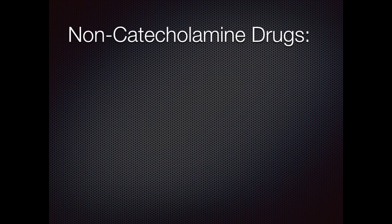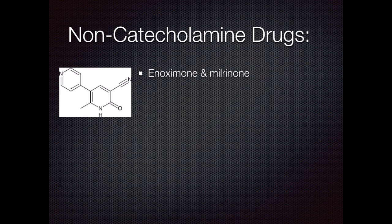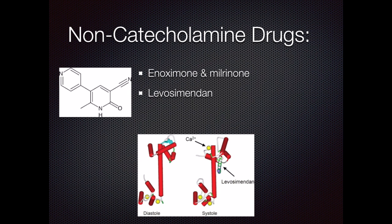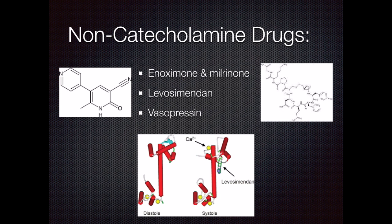There are other vasoactive drugs that are non-catecholamine and therefore do not work on adrenergic receptors. They work further downstream in the G-protein-stimulated secondary cascade to increase contractility. There is no significant evidence that these drugs improve outcomes, and they are not commonly used as first-line agents. The first drugs are inoximone and milrinone, which are phosphodiesterase-3 inhibitors that prevent the hydrolysis of intracellular cyclic AMP, therefore improving the effects of this cascade. Levosimendan is a calcium sensitizer which increases the sensitivity of myocardial troponin to intracellular calcium, increasing contractility without increasing myocardial oxygen demand. Vasopressin, or ADH, is an endogenous hormone that increases intracellular calcium.